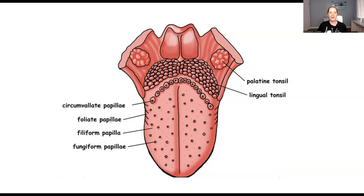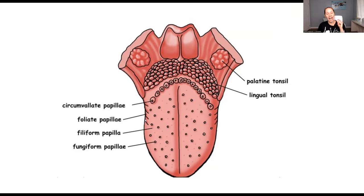And then you're going to have the foliate papilla. You can't really tell here, but those are at the side of the tongue. What you have to know is you typically have to take the tongue and look side to side in order to see those. Even if the patient sticks out their tongue, you can't really see them — you have to look.